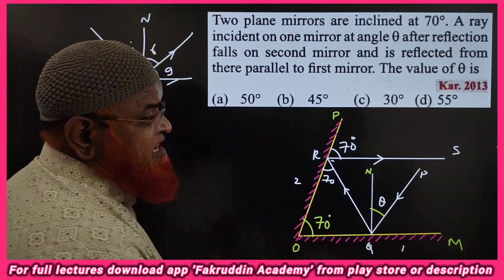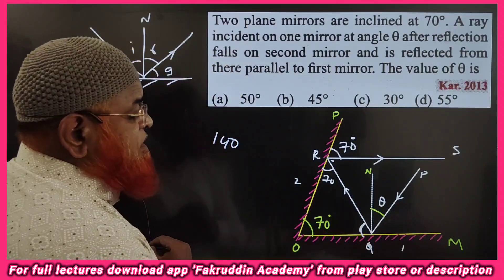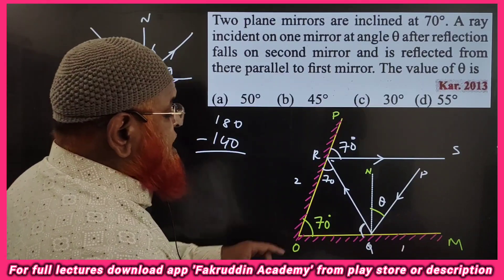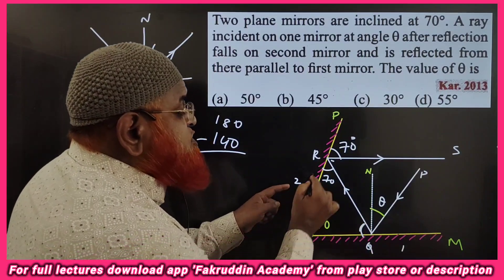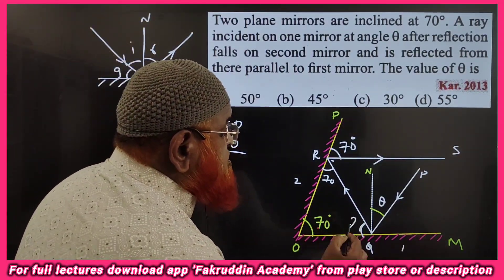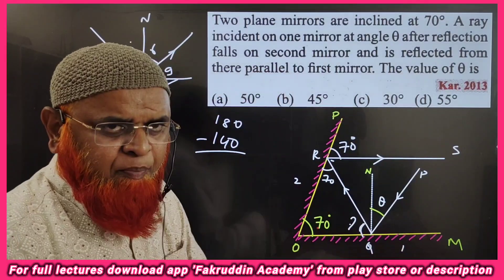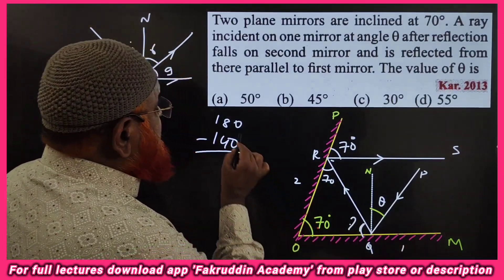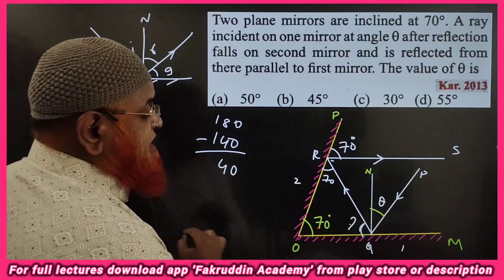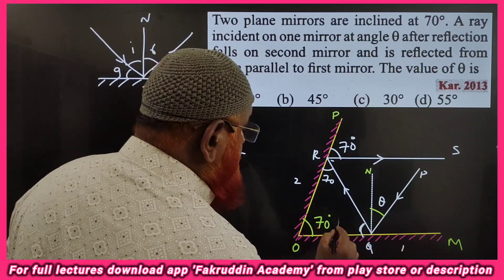We need to find angle theta. Since both glancing angles are 70 degrees, adding them gives 70 plus 70 equals 140. Now, by the angle sum property of a triangle, the sum of all angles must be 180 degrees. So the third angle is 180 minus 140, which equals 40 degrees.